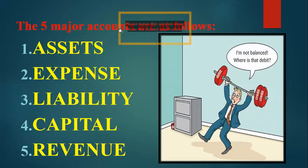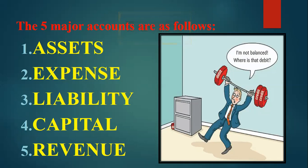We have five major account natures. Just as a person may be talkative or shy, accounting has five natures: Assets, Expense, Liability, Capital, and Revenue. You have to revise these with me so you will learn them. The five natures of accounts are: Assets, Expense, Liability, Capital, and Revenue.